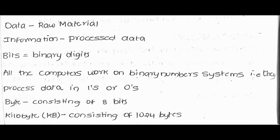Bits and binary digits: all computers work on a binary number system — they process data in ones and zeros. One byte consists of eight bits. It is used for storing information and has a value of true or false. An individual bit has a value of either zero or one, and data is stored and instructions are implemented in groups of bytes.